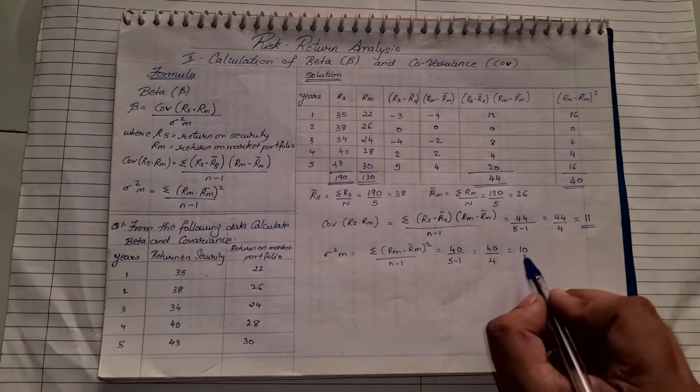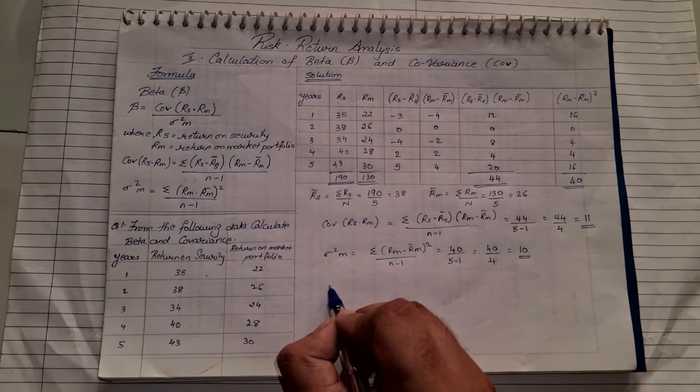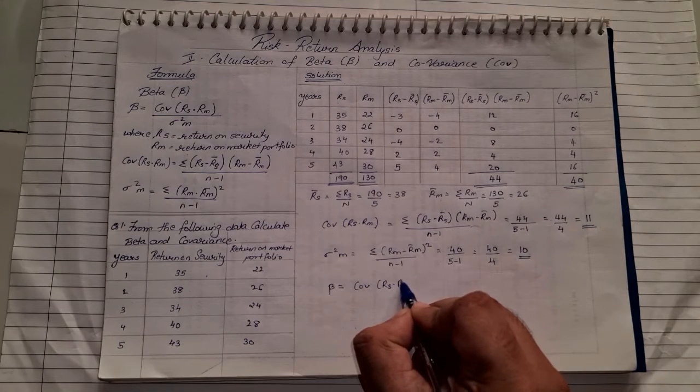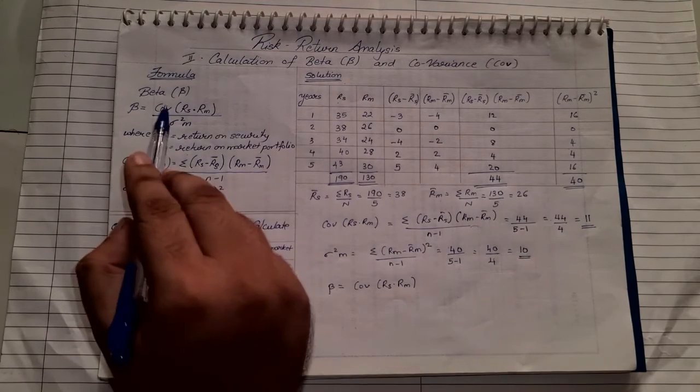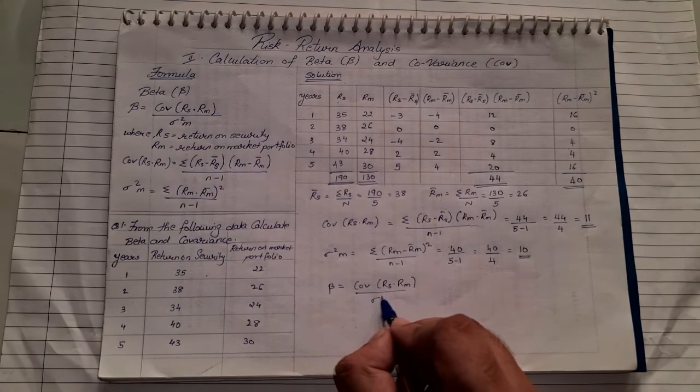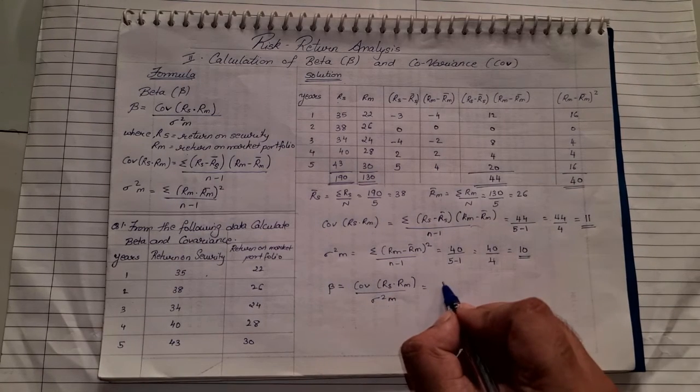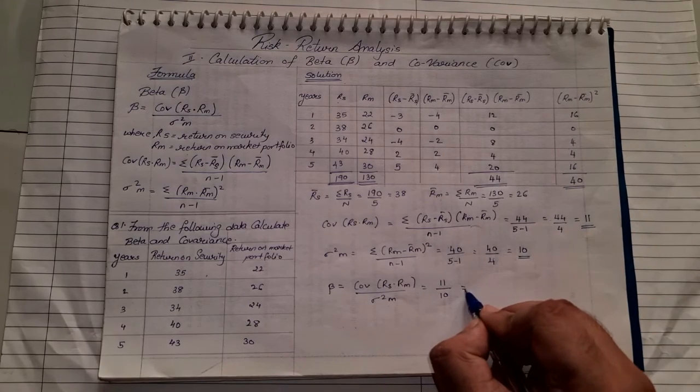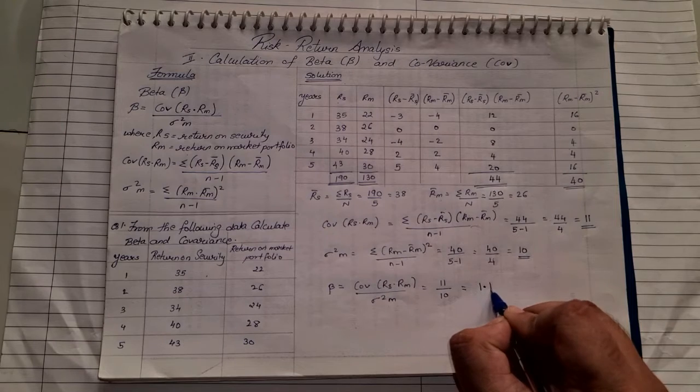So we got the numerator and denominator values. Now we can use the final formula: beta equals covariance upon standard deviation square M. So that is 11/10. When you divide it, we get the answer of beta, which is 1.1.